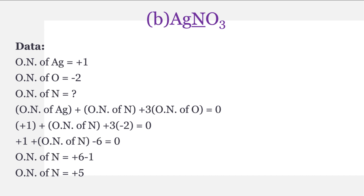Now the next question: silver nitrate AgNO3. Is question mein nitrogen ko underline kiya gaya hai, it means that oxidation number of nitrogen has to be found. Data: oxidation number of silver is equal to plus one, oxidation number of oxygen is equal to minus two, and oxidation number of nitrogen aapne find karna hai. Formula ki form mein: oxidation number of silver plus oxidation number of nitrogen plus three multiplied by oxidation number of oxygen equals zero — yahan pe teen atoms hain oxygen ke. Silver ka oxidation number ki value put karenge, oxygen ki value put karenge, three se multiply hoga, aur simply calculate karenge. Oxidation number of nitrogen is equal to plus five.